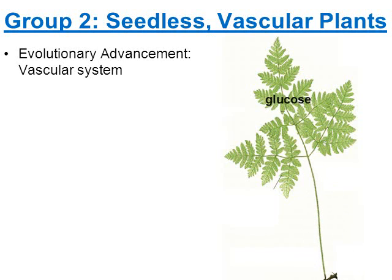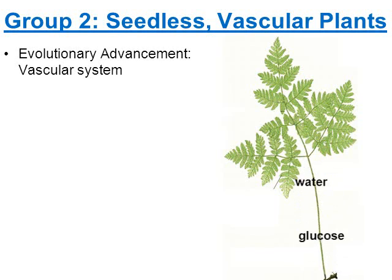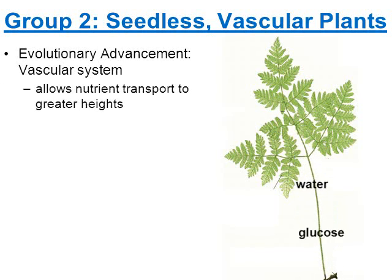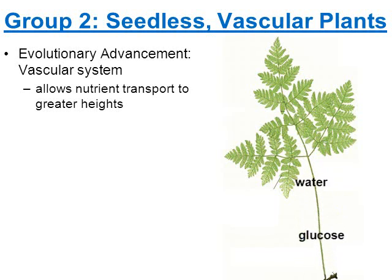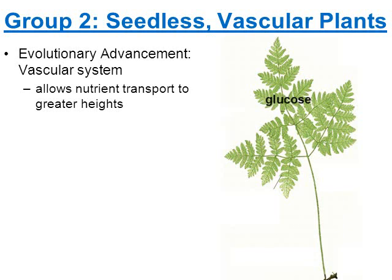In my previous video, when we talked about group one — the seedless and non-vascular plants — we really focused on mosses. Mosses are seedless, and so are today's plants: ferns. The difference is that mosses do not have a vascular system, but today we're learning about plants that do. The advancement of a vascular system allows these plants to grow taller and transport nutrients to greater heights. There is now a way for water to be delivered from the roots upward, and for glucose created through photosynthesis in the leaves to be transported downward to the roots. Mosses are non-vascular — they don't have a way to transport nutrients great distances — but ferns can be much taller because of their vascular system.